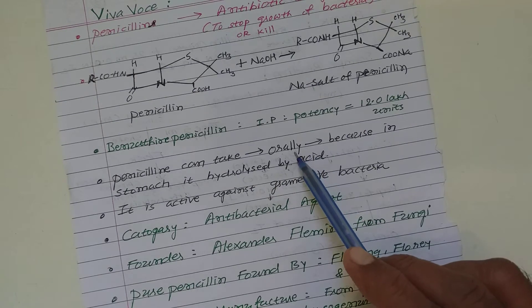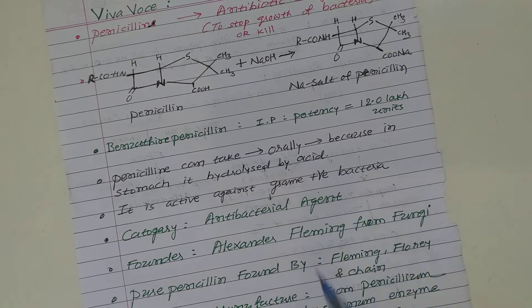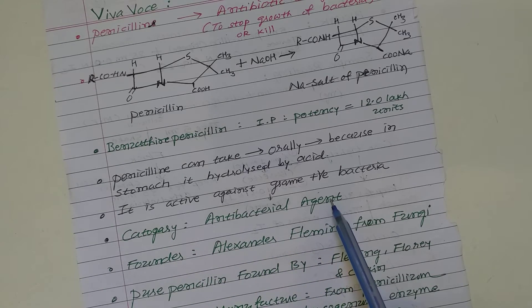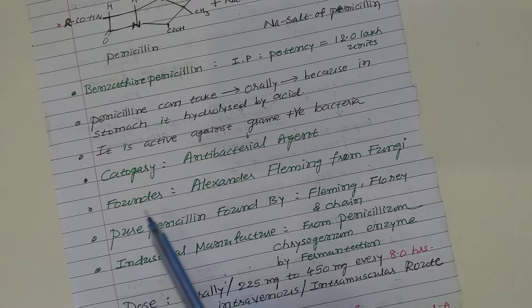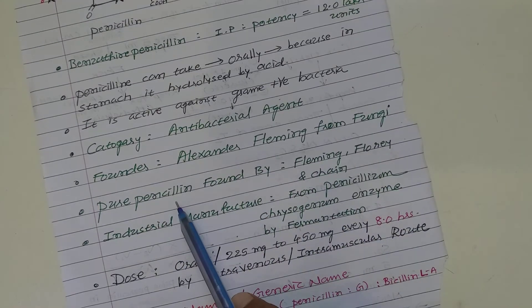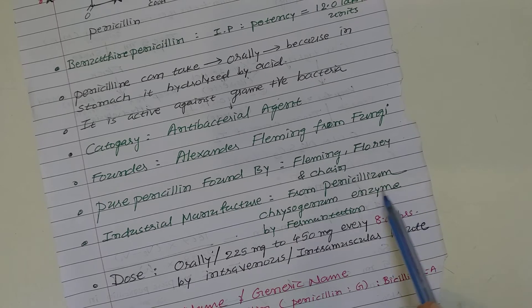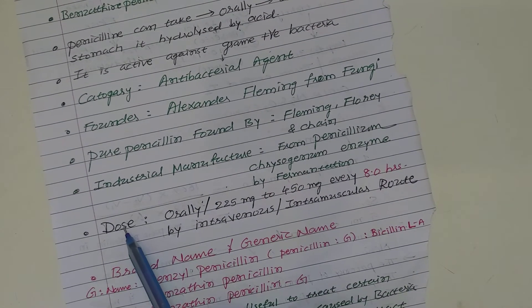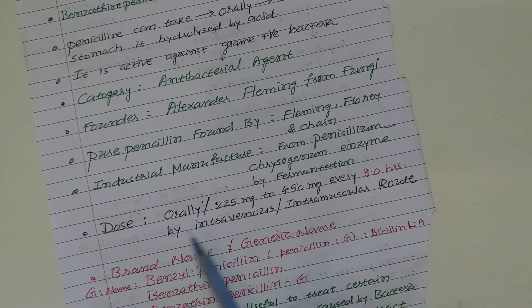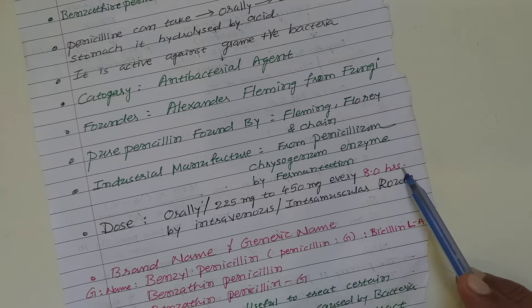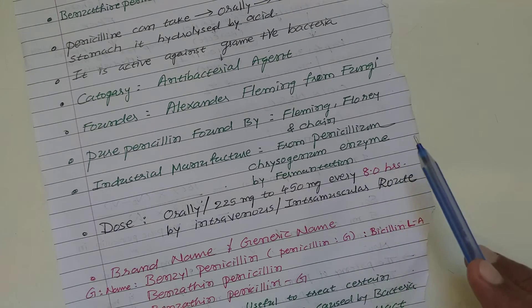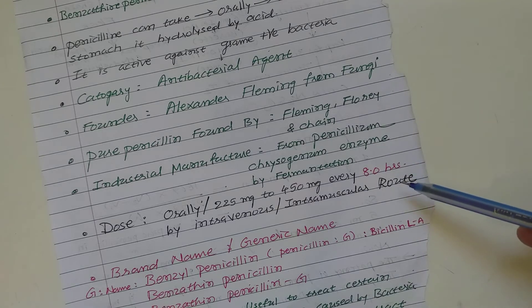Penicillin cannot be taken orally because in the stomach it is hydrolyzed by stomach acid. It is active against gram-positive bacteria and is one type of antibacterial agent. Penicillin was discovered first by Alexander Fleming from fungi. Pure penicillin was founded by Fleming, Florey, and Ernst Chain. Industrial manufacture of penicillin is done from Penicillium chrysogenum using fermentation. Penicillin can be taken by intravenous injection or intramuscular injection, and is always given after an 8-hour interval — this 8-hour capacity to kill bacteria is known as its potency.